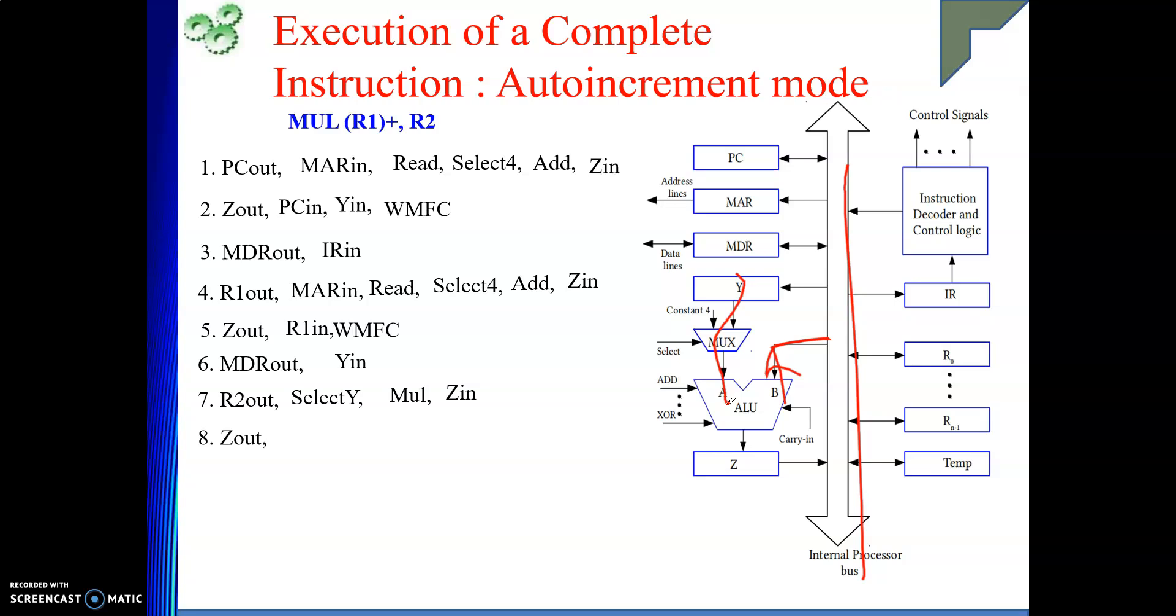After that, what I will do? Z out. Means the result is ready. Now give it to which register? R2. R2 in. And then my all operations are done. Next last one is end. This is all about auto increment addressing mode.